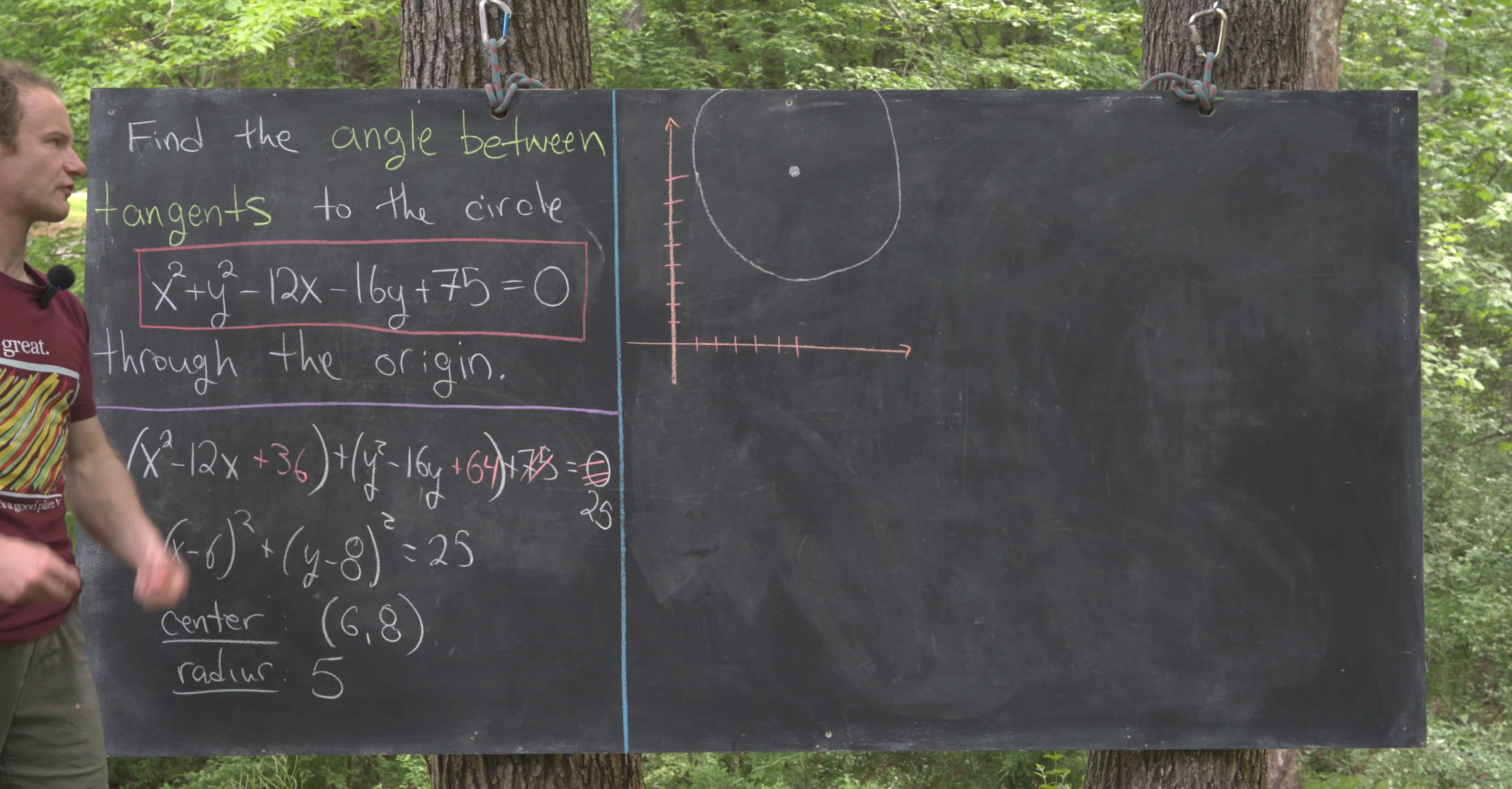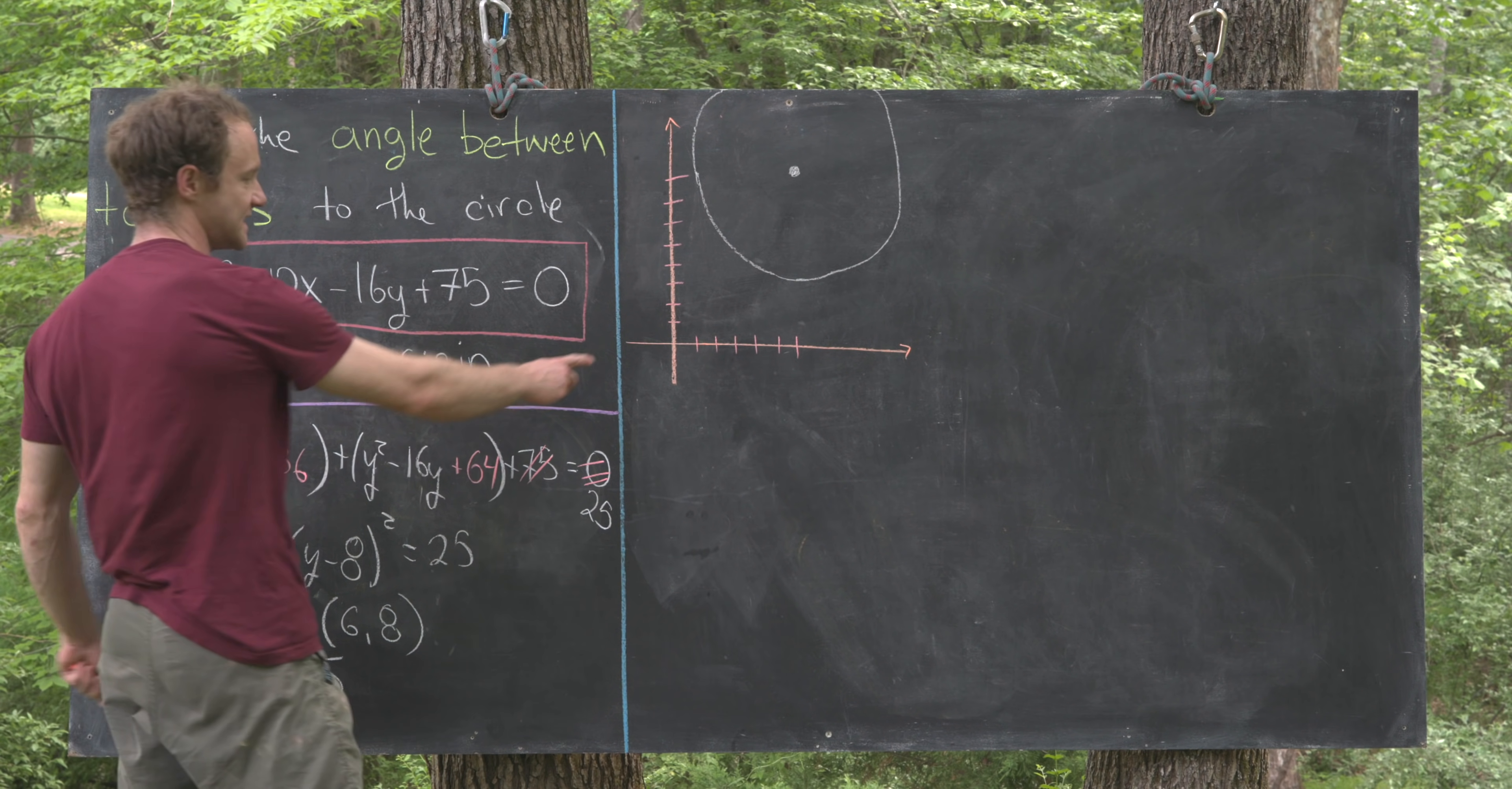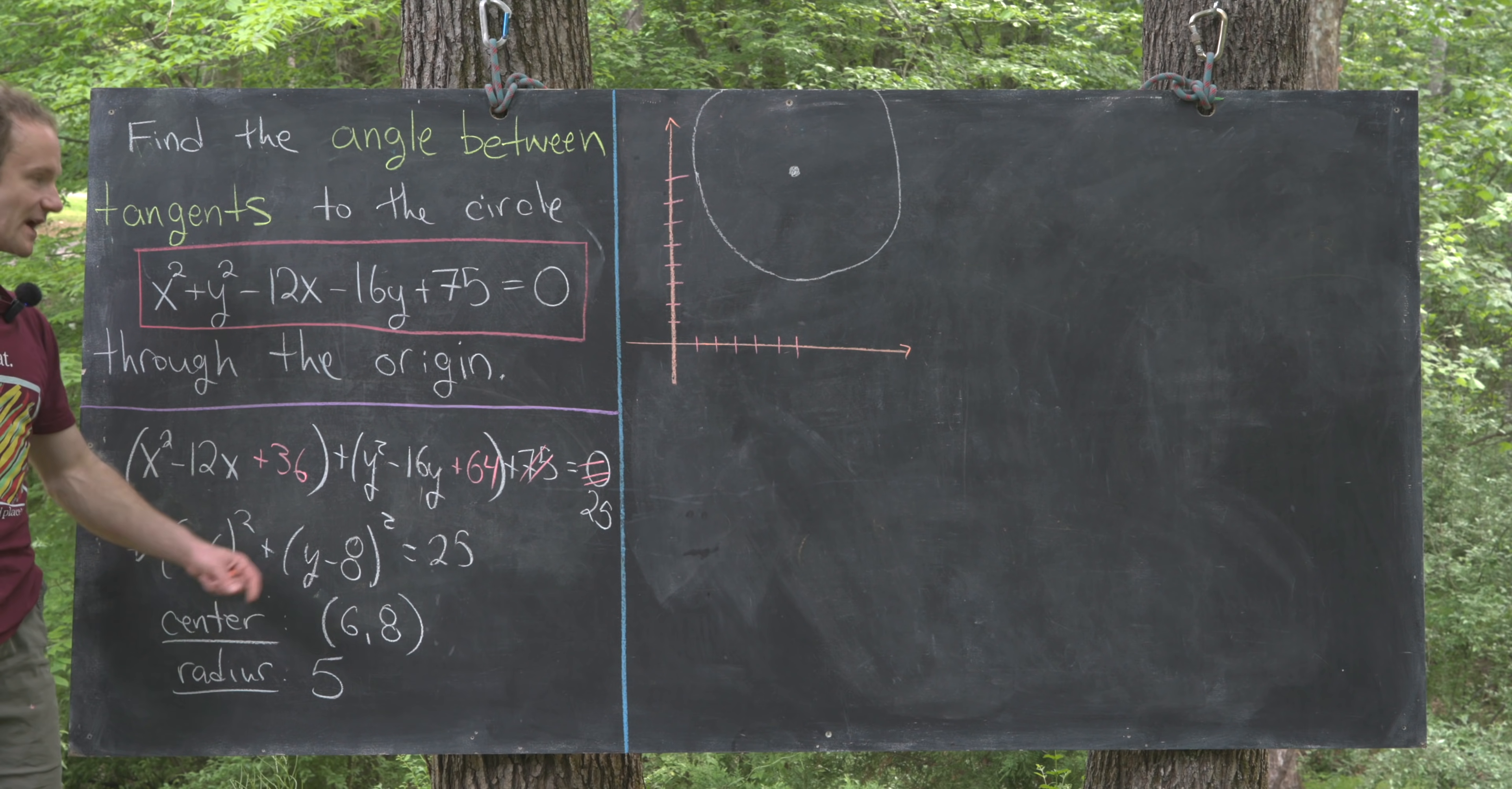We've got a general picture here. It's not perfect, but it's good enough. Notice we've got our center of our circle at 6, 8, and I've given it a radius of 5.